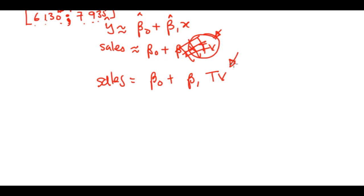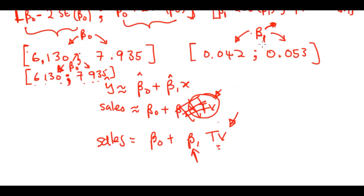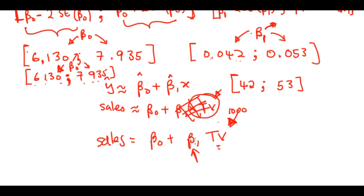In the model, sales equals beta_0 plus beta_1 times TV. One unit increase in TV leads to beta_1 units increase in sales. Our beta_1 lies between 0.042 and 0.053. So you can say: if we increase our TV advertising budget by one thousand, our sales are going to increase by 42 to 53 units. That's a very neat and clean interpretation of the confidence interval for beta_1.